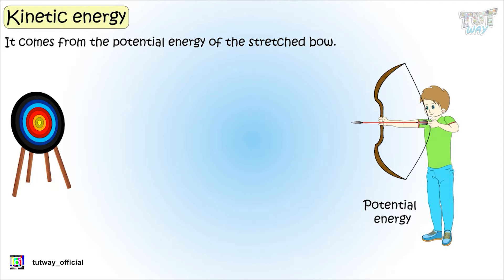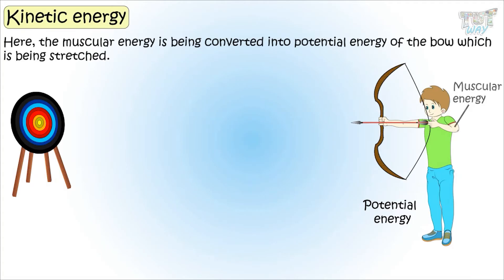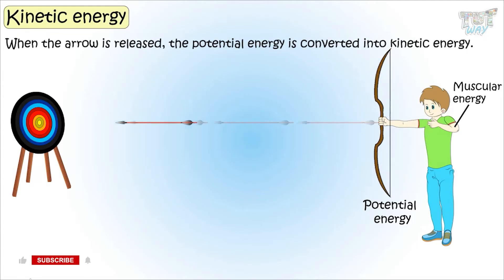So kids, energy is neither created nor destroyed. It can just be converted from one form to another. Here, the muscular energy is being converted to the potential energy of the bow which is being stretched. And then, when it's released, potential energy of the bow is being converted to kinetic energy of the arrow.